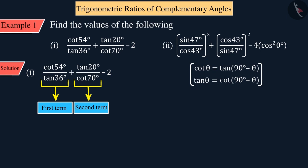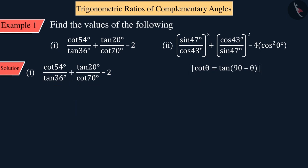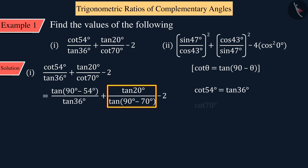Here, we change cotθ to tan(90° - θ) as per our convenience. So the first term of the expression cot54° is written as tan(90° - 54°) which gives us cot54° equal to tan36°. And similarly, in the second term cot70° equals tan20°.